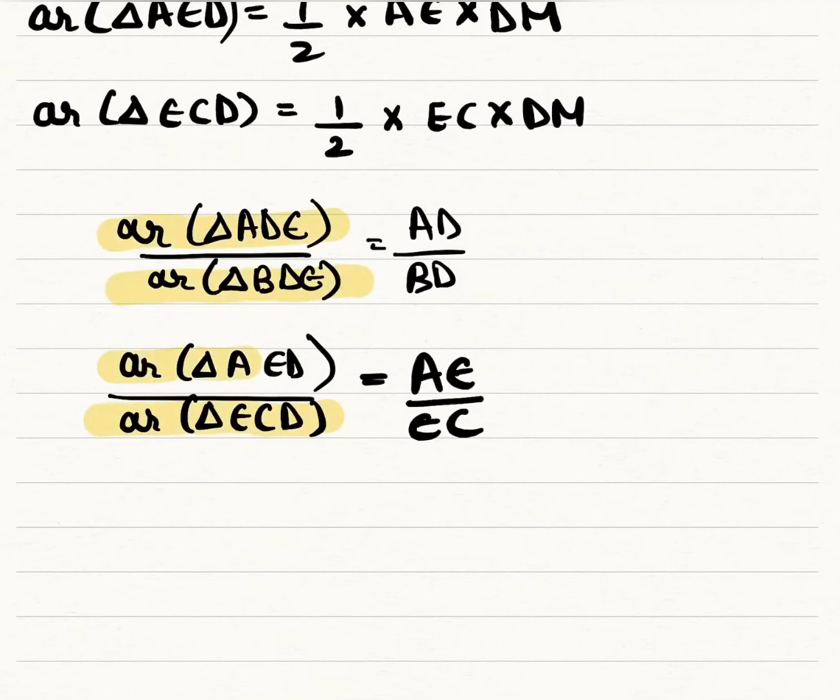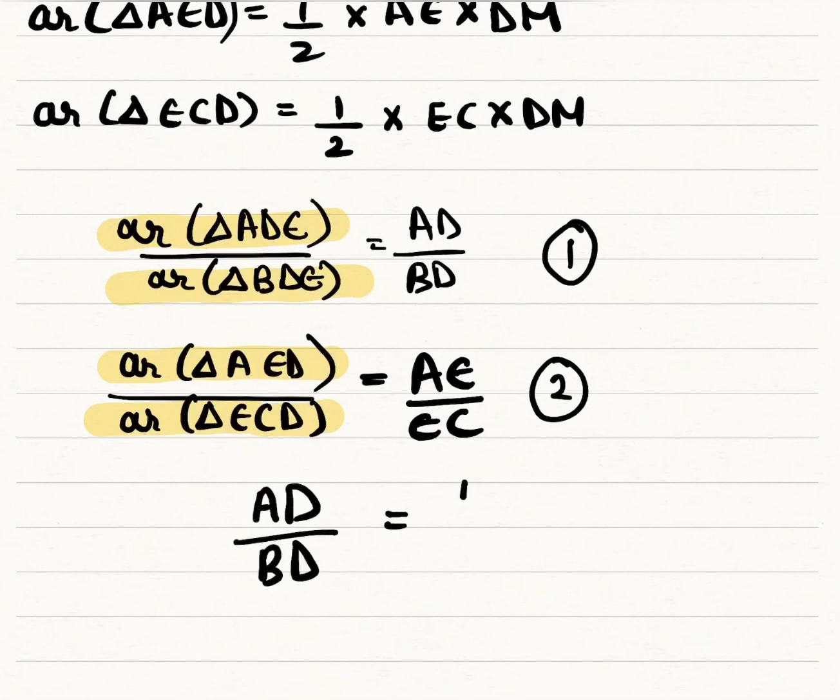Triangles ADE and AED are one and the same. The areas of the numerators in the left-hand side of these two cases are equal, and the denominators in the left-hand side are also equal in both cases. So things which are equal to the same thing are equal to one another. Therefore, AD by BD is equal to AE by EC.